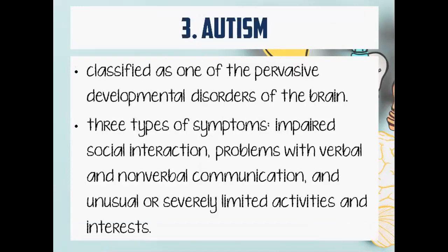Third is autism. It is classified as one of the pervasive developmental disorders of the brain. There are different types of symptoms — for example, you have an impaired social interaction, you do not know how to interact with people around you, you have problems with verbal and nonverbal communication, and you also have limited activities and interests.